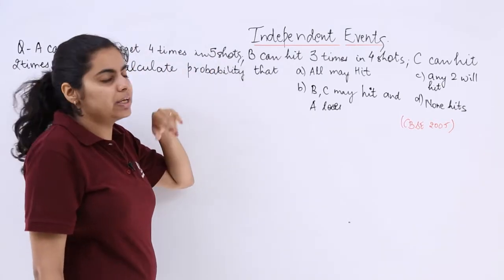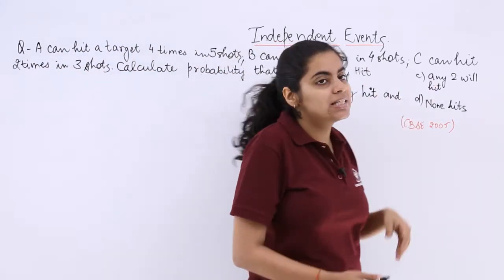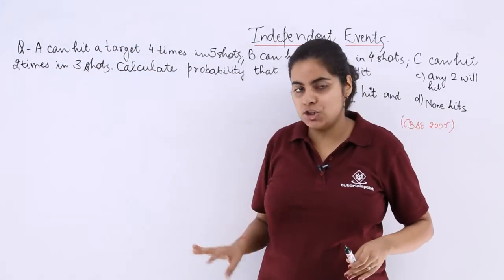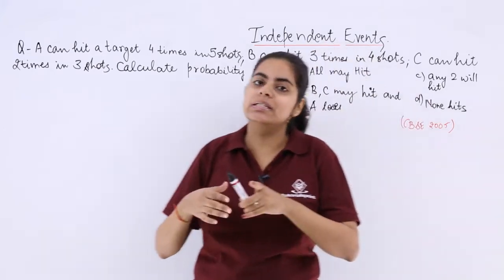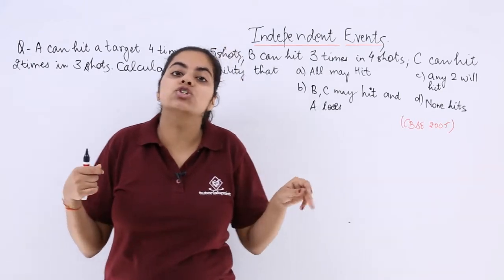A can hit a target four times in five shots. B can hit a target three times in four shots. C can hit two times in three shots. Calculate the probability that... and then you have four cases. So this is a question regarding shooting.